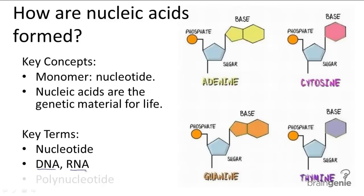Both these types of nucleic acids have the same nucleotide structure. A nucleotide always consists of a phosphate group, a sugar, and a base. These changing bases are what make up the genome. They act like letters that, when strung together, create sentences to convey genetic information.